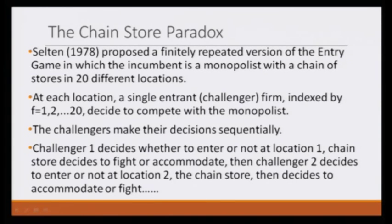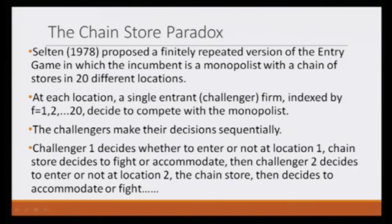Selten proposed a version of this entry game in which the incumbent — player 2 who gets to move second — is a monopolist who has a store at 20 different locations. At each location, a single entrant, a challenger indexed 1 to 20, either decides to enter the market or remain out of the market — they decide to compete with the monopolist. These challengers make their decisions sequentially, starting from challenger 1, 2, 3 up to 20.